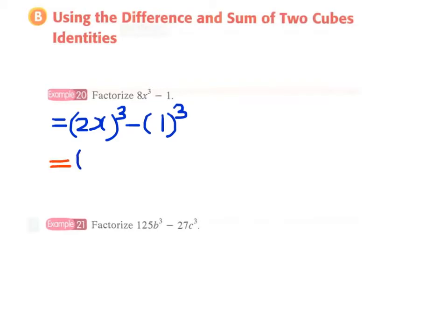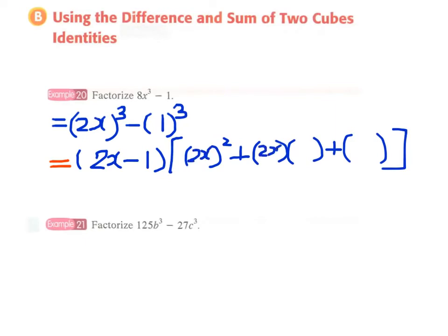And therefore we have a minus b, a minus b, followed by the square of a plus ab plus b squared.